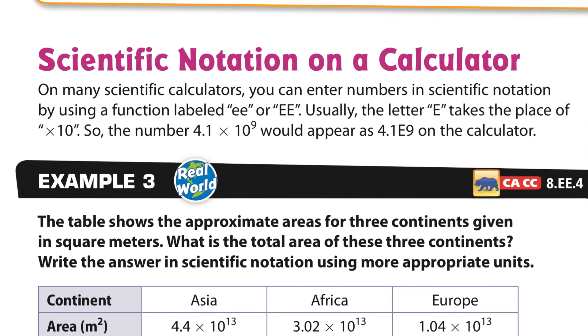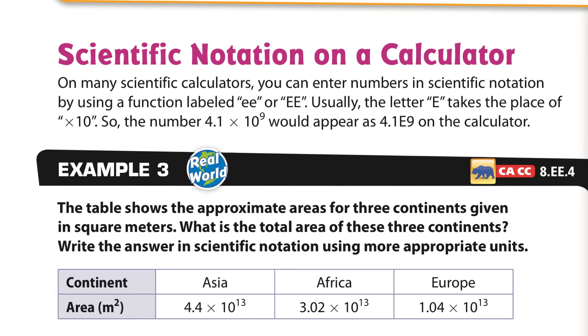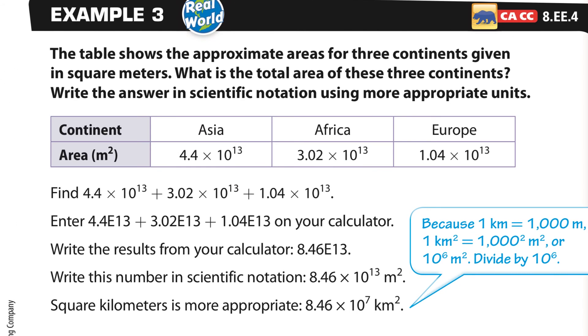Okay. Scientific notation on a calculator. So this is kind of weird. On many scientific calculators, you can enter numbers in scientific notation by using the function labeled EE. Usually the letter E takes a place of times 10. So the number 4.1 times 10 to the 9th would appear as 4.1E9. Okay. When you see this, the calculator will write it that way. And you can see the times 10 is the E right there. So super simple.